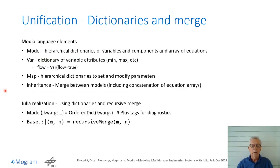As pointed out earlier, the new design is a new unification of constructs, and it uses dictionaries and a merge operator. A model is a hierarchical dictionary of variables and components and an array of equations. A var is a dictionary of variable attributes: mean, max, init, etc. A map is a hierarchical dictionary to set and modify parameters. These dictionaries can be recursively merged using an overloaded bitwise or operator. Inheritance is an example of such a merge between models.